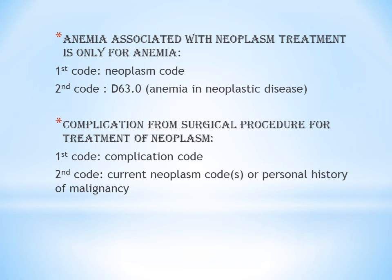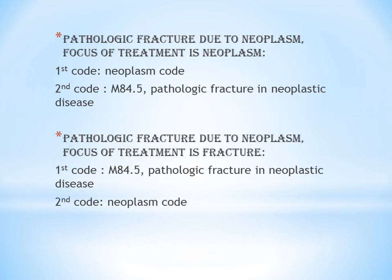Next is complications from a surgical procedure for treatment of neoplasm. Treatment for neoplasm includes chemotherapy, radiation, and surgery. If a patient had surgery due to neoplasm and currently presents with a complication from that surgical procedure, the first code should be that particular complication — hemorrhage, infection, or whatever it may be. The second code should be the neoplasm code if the patient still has active neoplasm, or a personal history of malignancy Z code if the neoplasm is cured and there is no longer any active treatment.